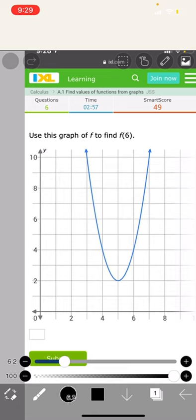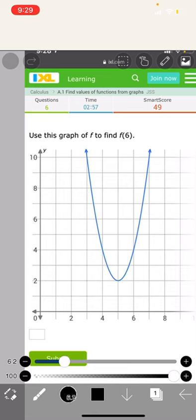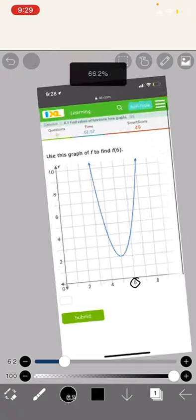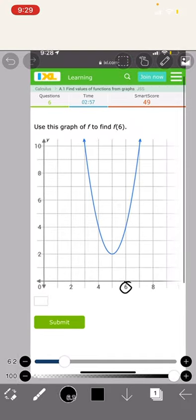Here is how we can find the answer. When we use this 6 right here, we have to use this 6 on the F graph.